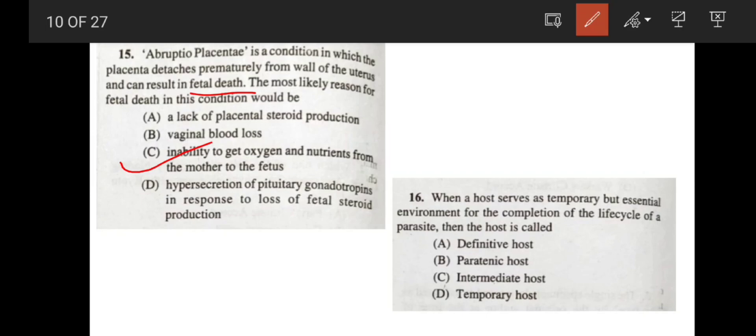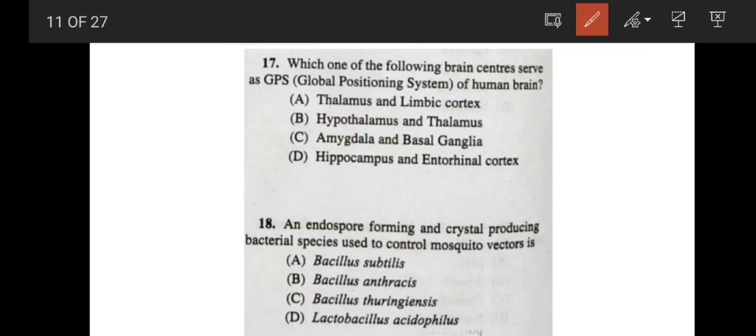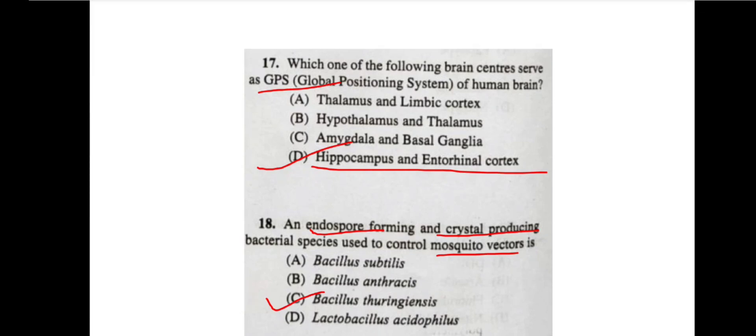Now, coming to the question number 16. When a host serves as temporary but essential environment for the completion of the life cycle of a parasite, that kind of host is known as paratonic host, option B. Now, coming to the question number 17. Which one of the following brain centers serve as GPS of human brain? GPS of human brain is known as hippocampus. So correct answer is option D, hippocampus and entorhinal cortex. Now, coming to the question number 18. An endospore forming and crystal producing bacterial species used to control mosquito vectors is known as bacillus thuringiensis. The bacillus thuringiensis is a gram positive bacteria which can form the endospore and it can also form the crystal protein, which can be used to control the mosquito vectors. So correct answer is option C, bacillus thuringiensis.